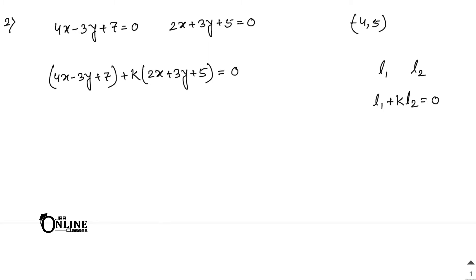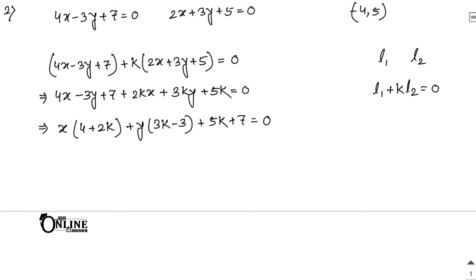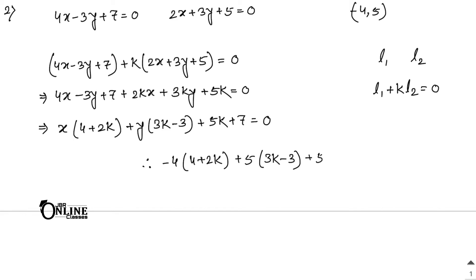Expanding: 4x - 3y + 7 + 2kx + 3ky + 5k = 0. Collecting terms: (4 + 2k)x + (3k - 3)y + (5k + 7) = 0. Since the required line passes through (-4, 5), substitute x = -4 and y = 5: -4(4 + 2k) + 5(3k - 3) + (5k + 7) = 0.